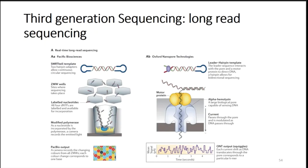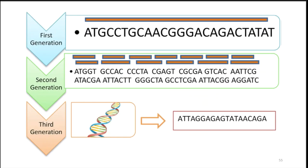Third-generation sequencing, or long-read sequencing, is the next frontier. Two main methodologies exist, and the key advantage is the ability to sequence nearly an entire genome in one read. Comparing generations: first-generation Sanger gives long reads but sequences only a small fraction of the genome; second-generation NGS sequences the entire genome but in very short fragments that must be assembled; third-generation provides very long fragments, making assembly far easier. For clinical microbiology, this long-read approach may be ideal.